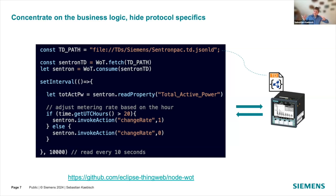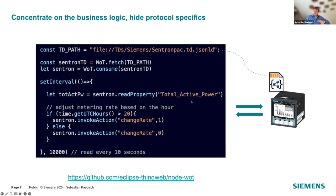This is very powerful because you have an abstraction that hides all the protocol specifics. For HTTP, you don't need to know whether to call GET or POST — all those details are provided by the Thing Description and you don't need to handle them at the application level. This is also very useful for protocols like Modbus, which require many more settings. You can truly concentrate on the business logic of your application.